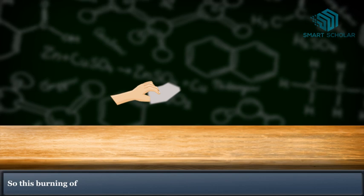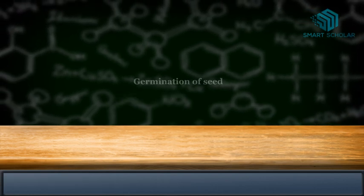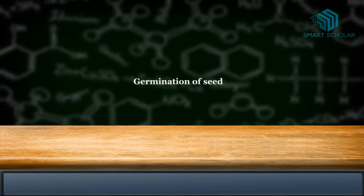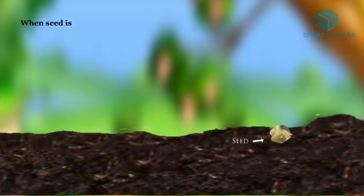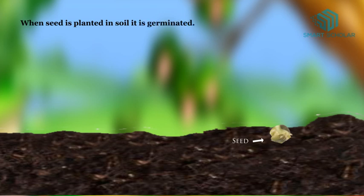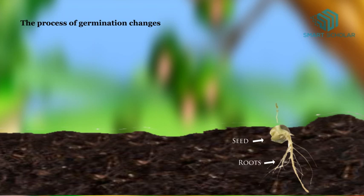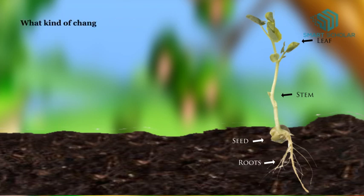Germination of seed: When a seed is planted in soil, it germinates. The process of germination changes seeds into small plants. What kind of change has taken place? It is an irreversible change because we can't get back the seed in its original form.